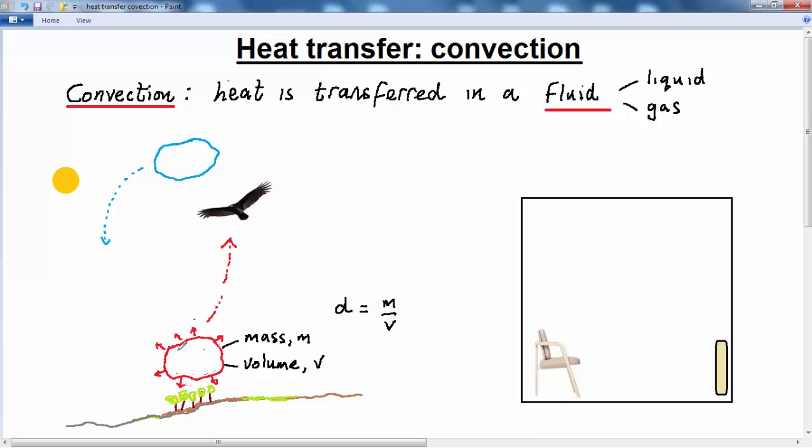We've still got the same amount of stuff in our block of air. But the volume has increased. And remembering that because density is equal to mass divided by the volume, if the volume increases, then the density will decrease. So let's just summarize that. The air warmed. As a result of that, it expanded. That means that its volume increased. And as a consequence of that, because density is mass divided by volume, its density decreased.